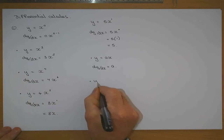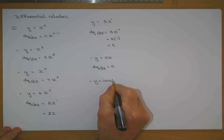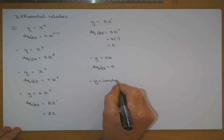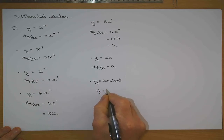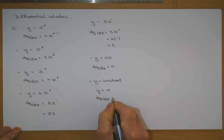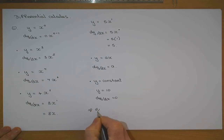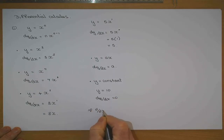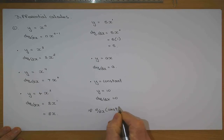If y is equal to a constant — that is a number without x in it — if y was equal to 10, then dy/dx is 0. Therefore we know that the derivative of a constant always turns out to be 0.